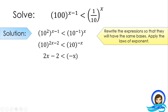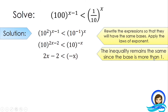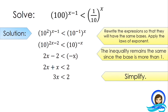So, 2x minus 2 is less than negative x. Transposing the variable and the constant to opposite sides: 2x plus x is less than 2. Negative 2 is transposed and becomes positive 2. 2x plus x is 3x, so 3x is less than 2. Dividing both sides by 3, therefore x is less than 2/3.